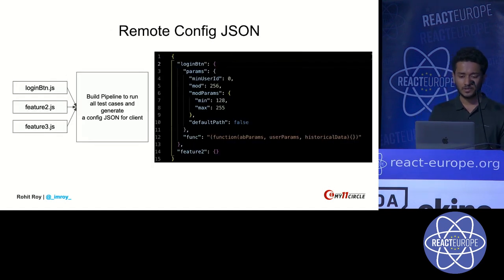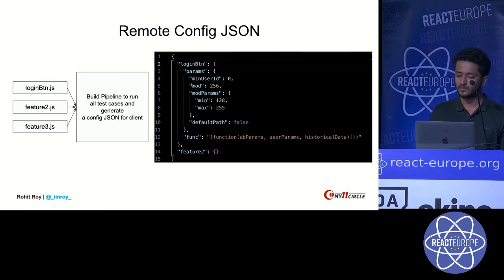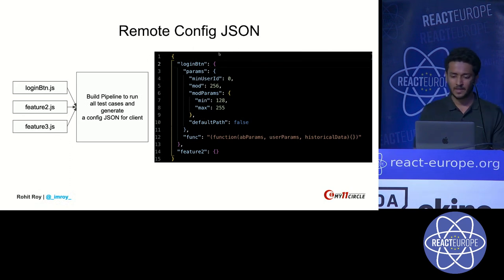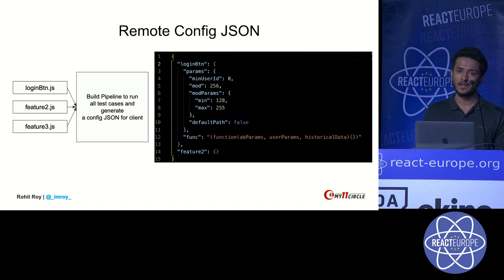These AB scripts are then combined through a CI/CD pipeline that merges the code and creates a remote config JSON, which looks something like this. All AB scripts are compiled into a JSON that we host on a CDN server. Whenever our app launches, the first thing it does is check whether a new config is available, fetch it, cache it, and then we're good to go.